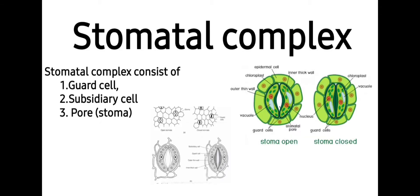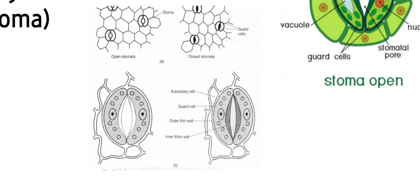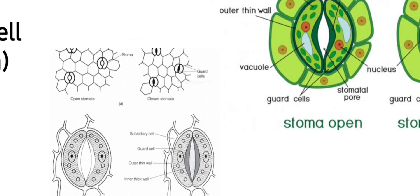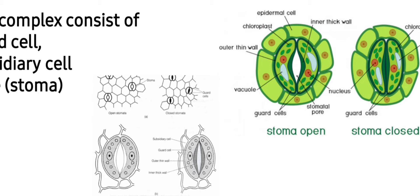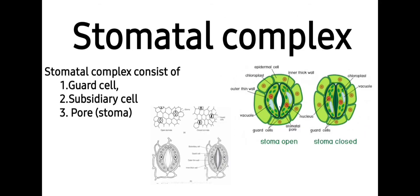In the stomatal complex you will find the guard cell, subsidiary cell, and pore. The middle portion is the pore, which is surrounded by the guard cells. Guard cells are kidney-shaped in dicots and dumbbell-shaped in monocots. The guard cells are further surrounded by epidermal cells called subsidiary cells. In the stomatal complex, the kidney-shaped guard cells are thick from inside and thin from the outside. Opening and closing of stomata is regulated by photosynthesis and transpiration, and stomata generally remain open during daytime and close at nighttime.